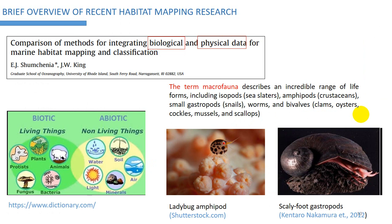The second paper integrates biological and physical data to build the map. I'll talk about some key definitions mentioned frequently in the paper. The first is biotic and abiotic: biotic refers to living things on the seafloor, like animals and plants, while abiotic refers to non-living things like soil, water, or minerals on the seafloor.